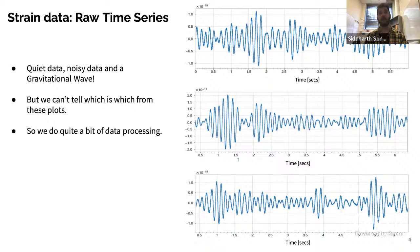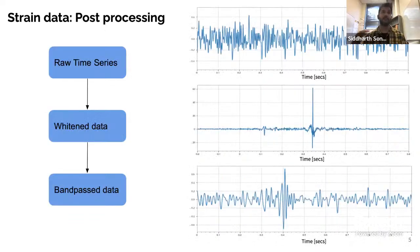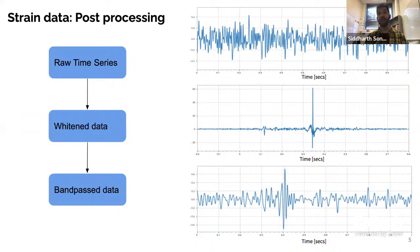We do quite a bit of data processing on top of this raw time series. We start with the raw time series, then we whiten the data and bandpass it. Whitening means we normalize the power in all frequency bins so that features at higher frequencies are also visible, because the raw data contains a lot more power at lower frequencies. Once we've whitened the data, we bandpass it — we take a lower and higher frequency cutoff and say we're only interested in what's going on between those thresholds, say between 10 Hz and 300 Hz.